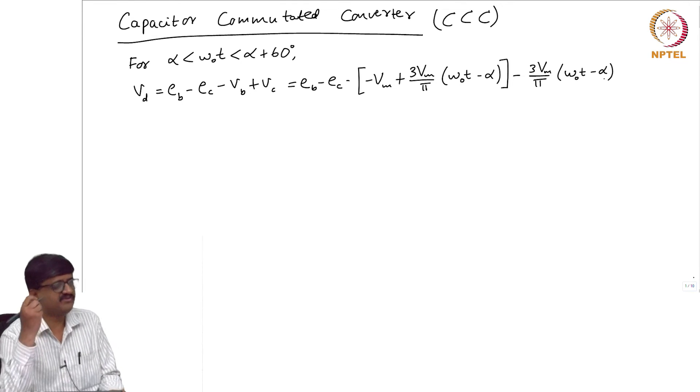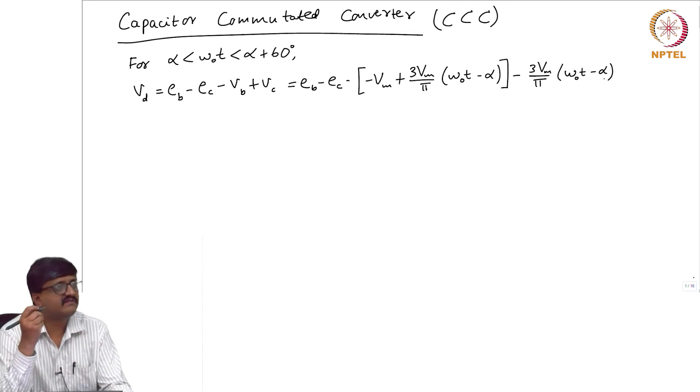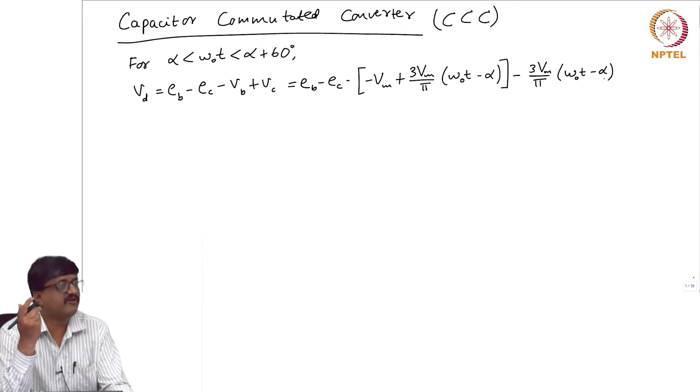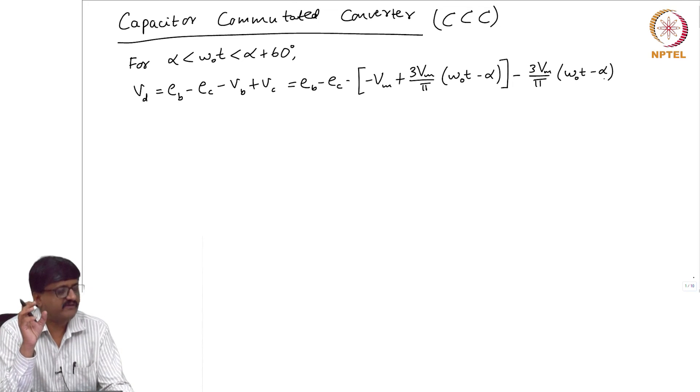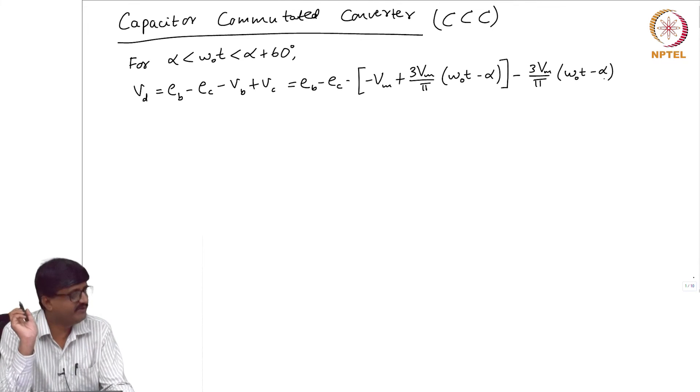It happens to be the same as the expression for the line commutated converter. The presence of capacitor will not affect the average value of the DC side voltage. I will leave it to you to verify.